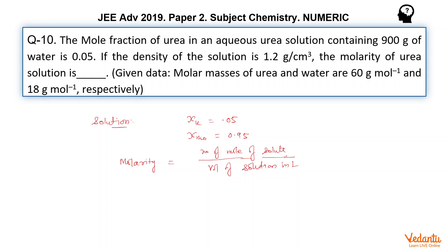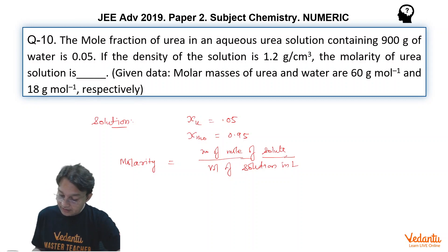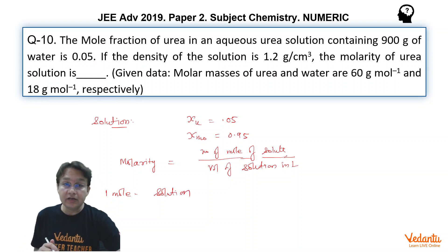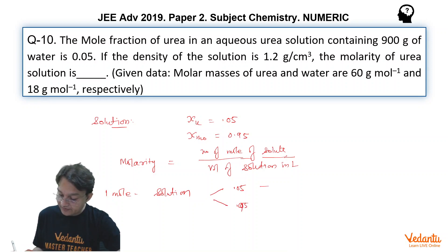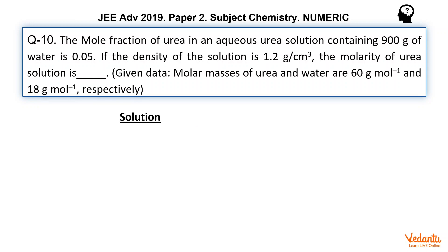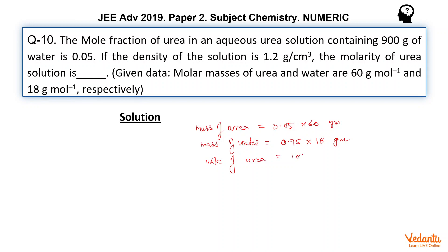So obviously, to find the molarity, first of all, let us assume that we have 1 mole of solution. And in this 1 mole, we have 0.05 mole of urea and 0.95 moles of water. So proceeding further, mass of urea equals 0.05 into 60 grams. Mass of water equals 0.95 into 18 grams. And mole of urea is 0.05 mole.